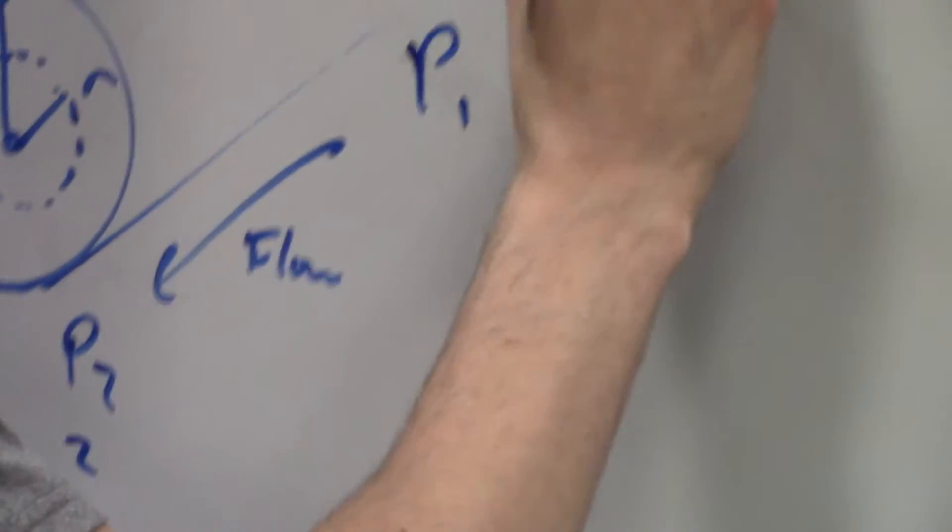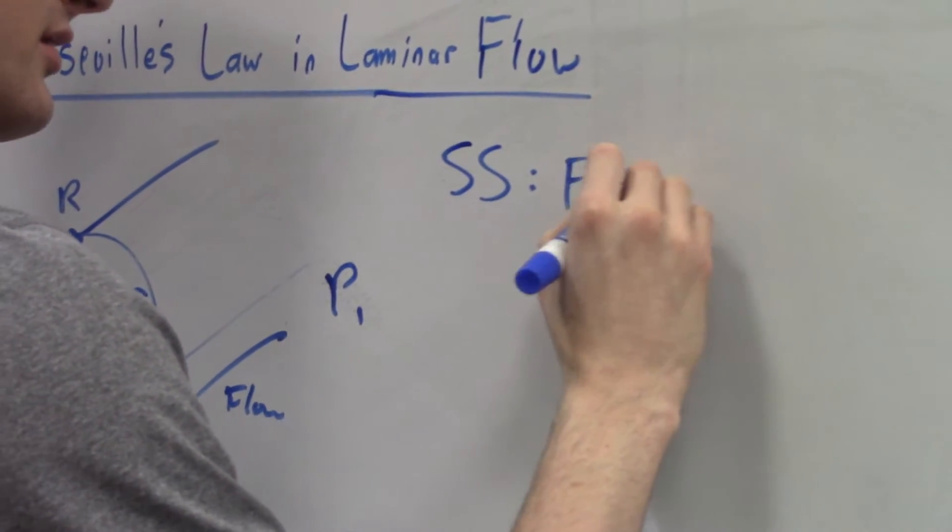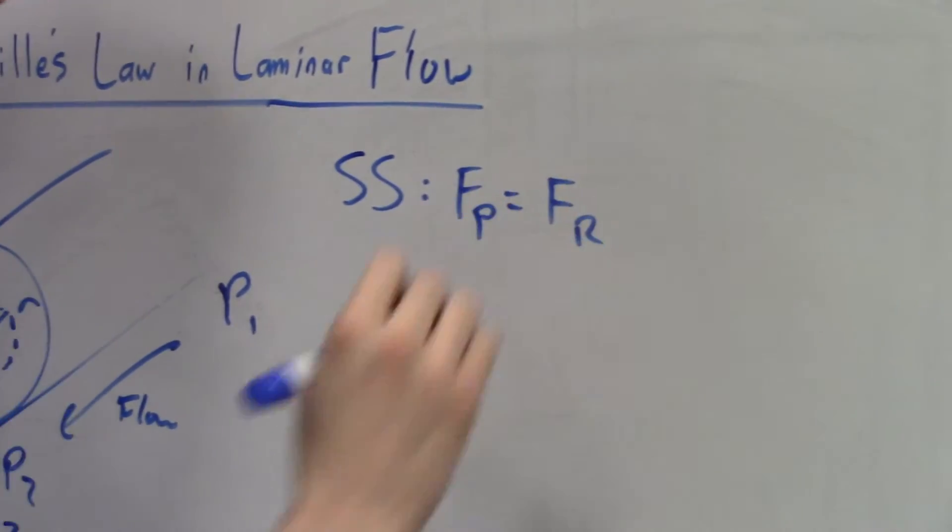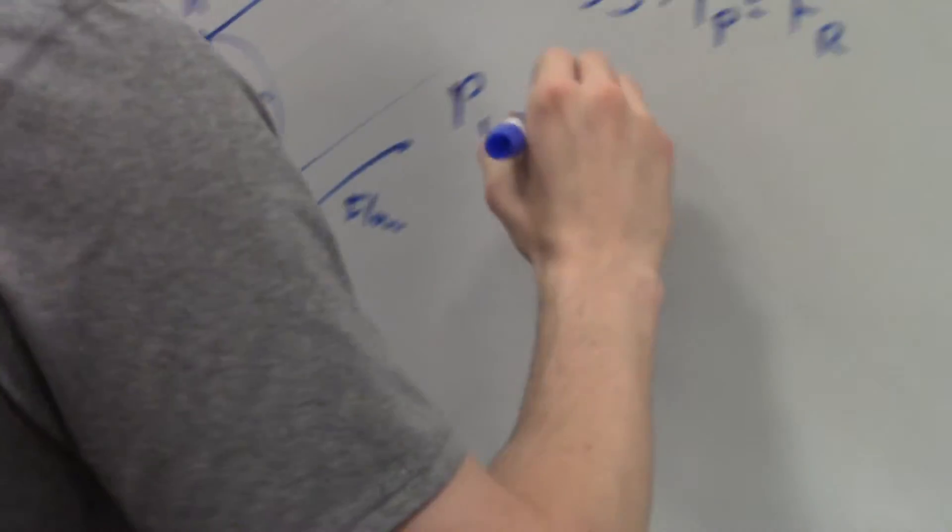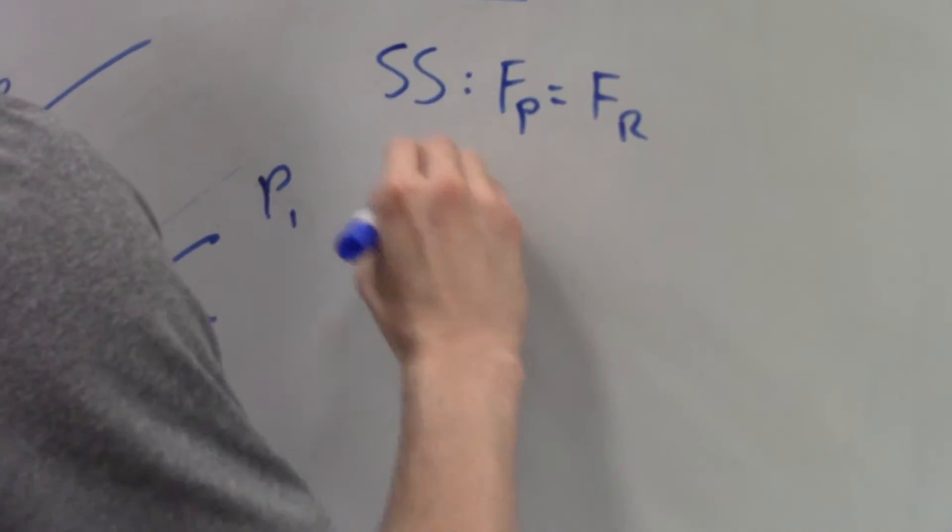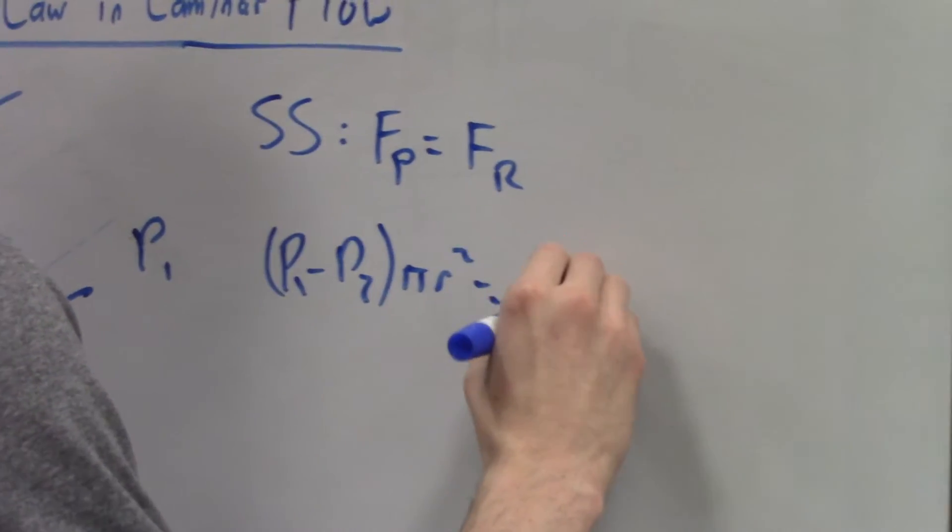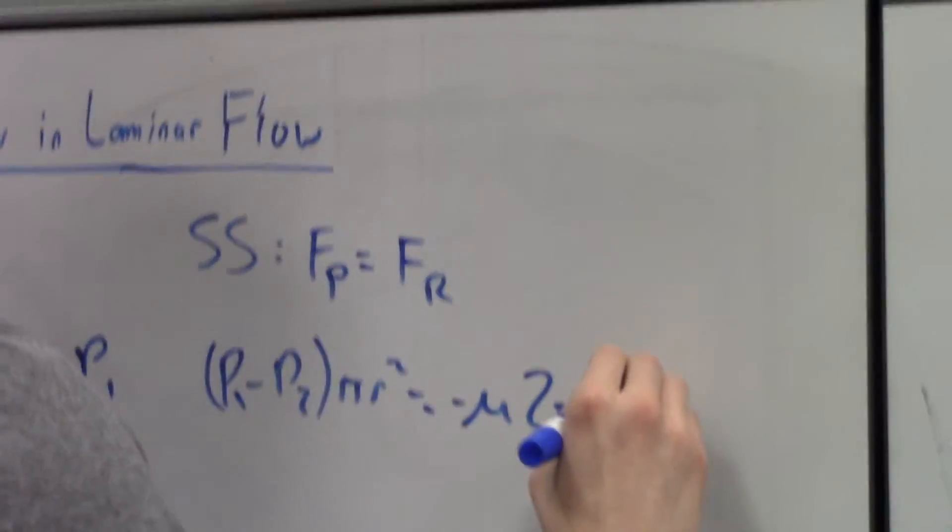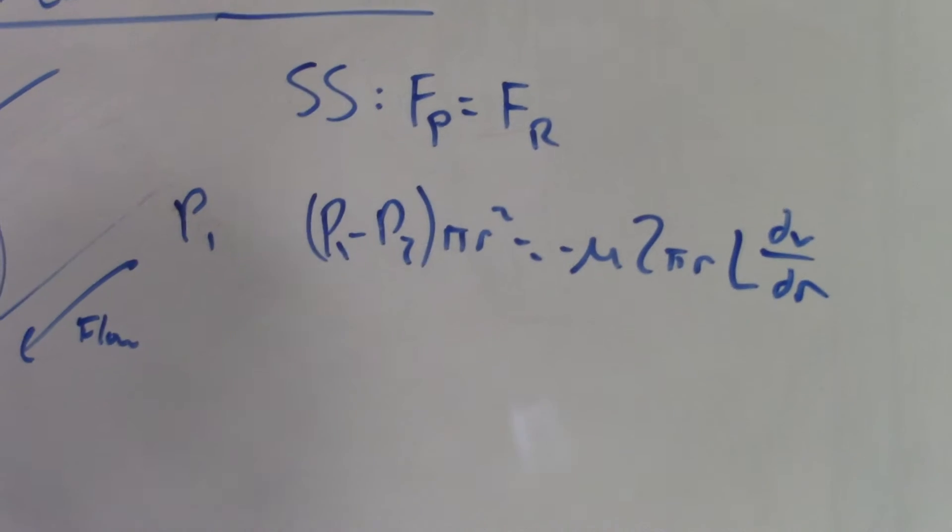Now in steady state, pushing force is equal to FR, so we simply just set these equal to each other. P1 minus P2 pi R squared equals negative 2 pi R length dV dR.